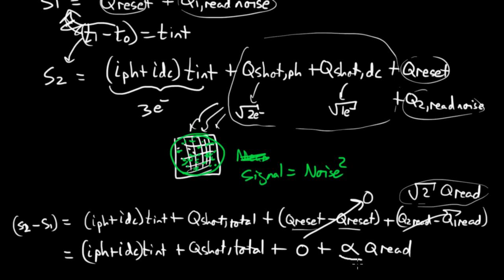And you can see, and this alpha here is going to be greater than 1. And I think it is root 2. But it's definitely greater than 1. And so what have we done? We've effectively eliminated Q reset while increasing our read noise. And if it is true that the reset noise was much greater than the read noise, which is usually true, this was an excellent trade. We've lowered the total noise of our sampling chain.